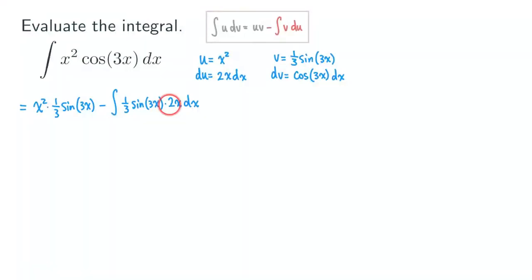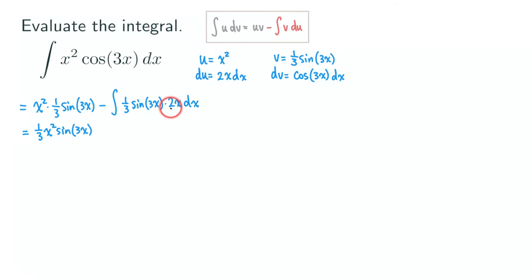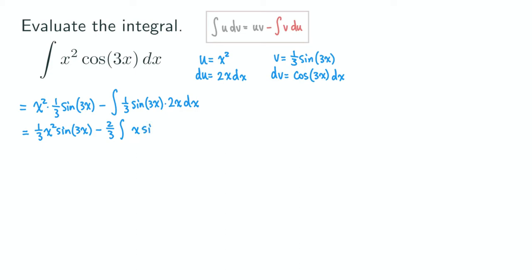Let's clean up the expression. We get one-third x squared sine 3x. The constants one-third and 2 can be pulled out by the constant multiple rule, giving us minus two-thirds times the integral of x sine 3x dx.